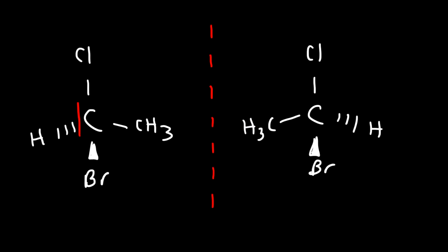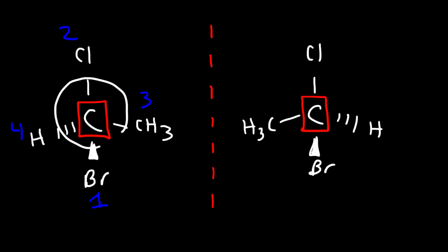Now let's identify the configuration of each chiral carbon atom. The group with the highest priority is the bromine atom because it has the highest atomic number, then the chlorine atom, then the methyl group, then the hydrogen. The hydrogen is on the dash, so it's going into the page, which is what we want. We count from 1 to 2 to 3, ignoring 4, and we have the R configuration since we're rotating it clockwise.